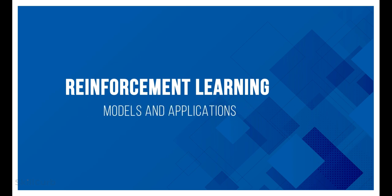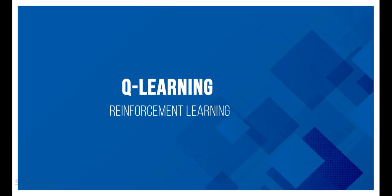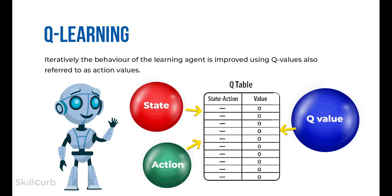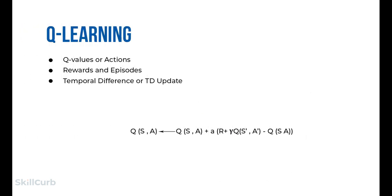After discussing the two types of machine learning, we now reach type three: reinforcement learning. The algorithm for discussion is Q-learning. Q-learning is a basic form of reinforcement learning which uses Q-values (also called action values) to iteratively improve the behavior of the learning agent. Q-values are defined for states and actions. Q is an estimation of how good it is to take action A at state S. This estimation is iteratively computed using the TD (temporal difference) update rule.